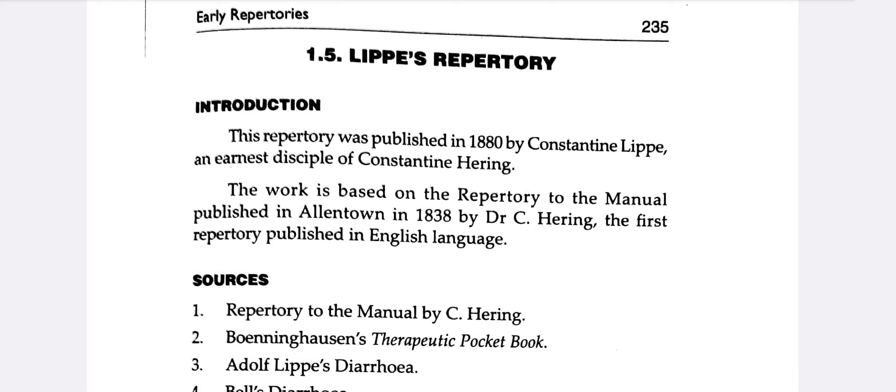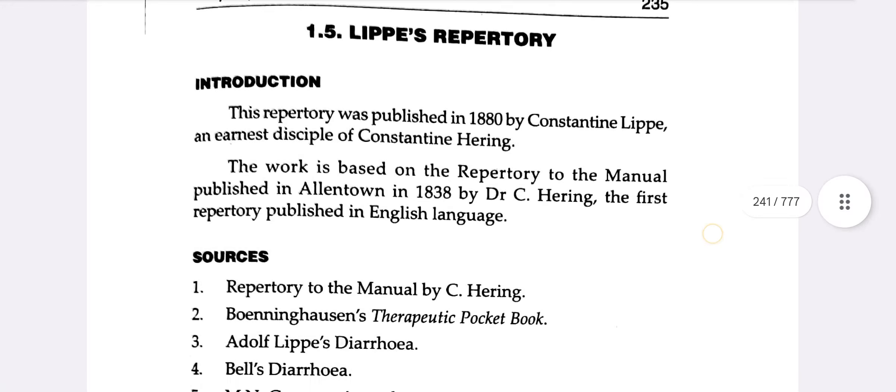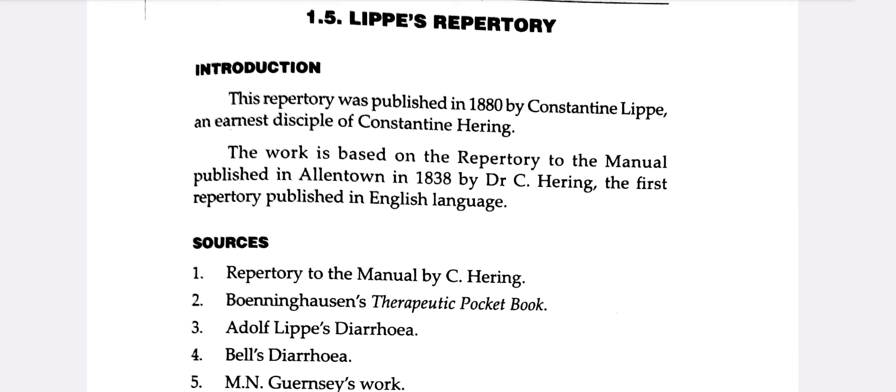Introduction to Lippe Repertory: This repertory was published in 1880 by Constantine Lippe, an earnest disciple of Constantine Hering. The work is based on the Repertory to the Manual published in Allentown in 1838 by Dr. C. Hering — the first repertory published in the English language.